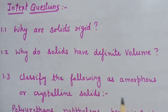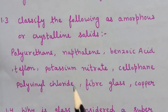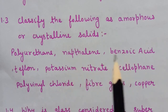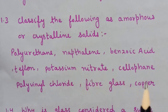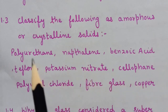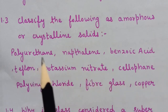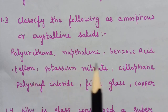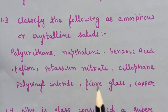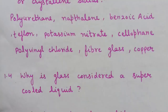Question 3: Classify the following as amorphous or crystalline solids. Naphthalene, benzoic acid, potassium nitrate, and copper are crystalline solids. Polyurethane, teflon, cellophane, polyvinyl chloride, fiber, and glass are amorphous solids.